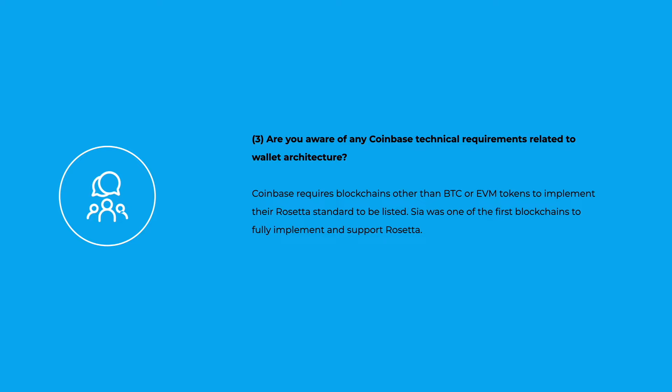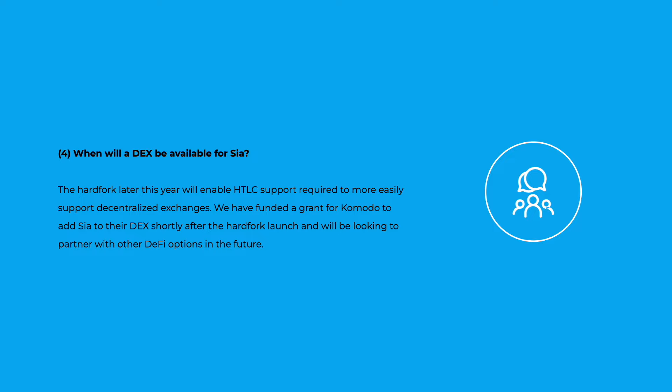Third question: are you aware of any Coinbase technical requirements related to wallet architecture? Coinbase requires blockchains other than BTC or EVM tokens to implement their Rosetta standard. Sia is pioneering one of the first blockchains to fully implement and support the Rosetta standard, demonstrating our commitment to compliance and accessibility on leading platforms.